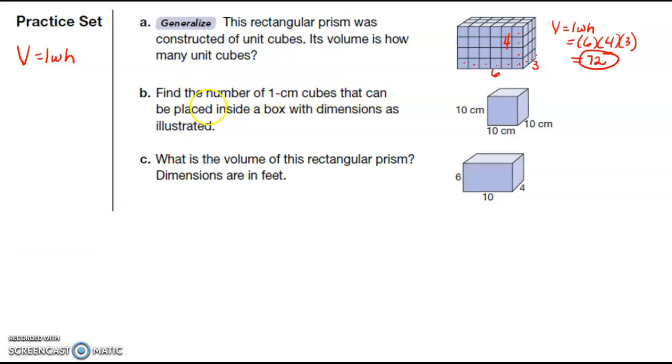Find the number of one centimeter cubes that can be placed inside a box with the dimensions. So this is also asking for volume. I don't know why they have to ask for it strangely, but again, we're going to use our volume is equal to length times width times height. And you can see this is a cube, so the length, width, and height, they're the same. So I have 10 times 10 times 10, which is 1,000 centimeters cubed.